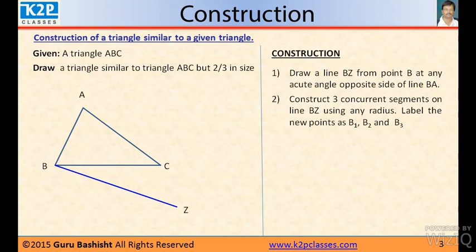The first step is draw a line BZ from point B at any acute angle opposite side of line BA. Now, construct three congruent segments on line BZ using any radius. Label the new points as B1, B2, B3.